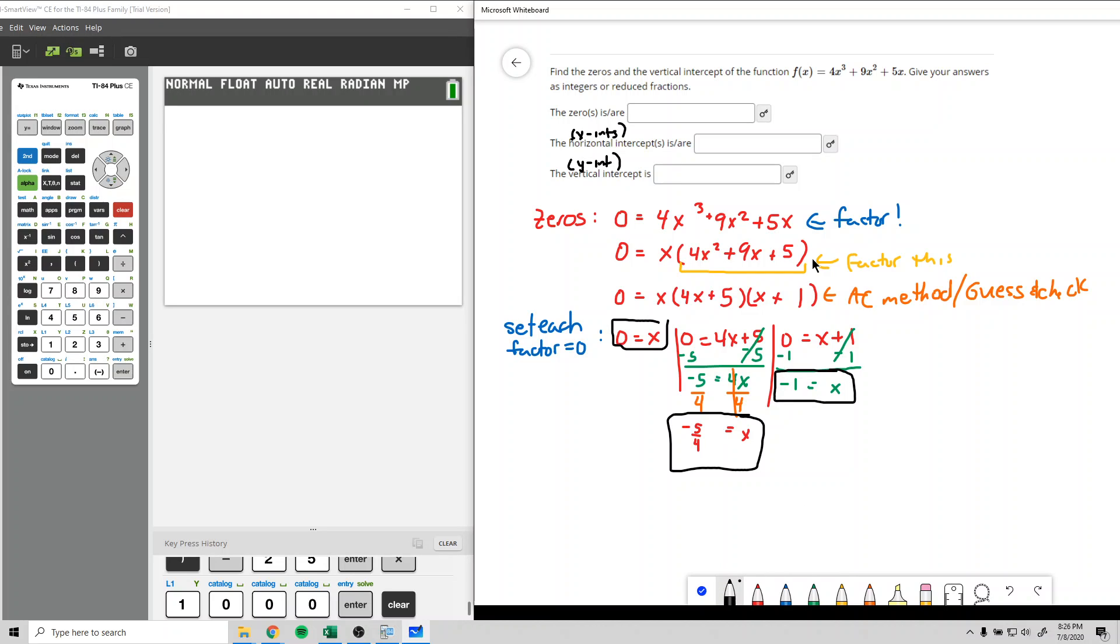Alright, so those are the zeros. 0, negative 5 fourths, and negative 1.